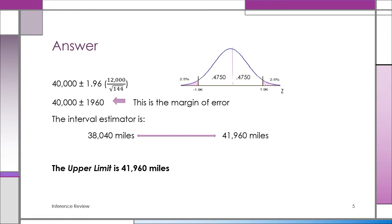The interval goes from 38,040 miles up to 41,960 miles. The probability that this interval contains the true population mean is 0.95. To answer the question: the upper limit of the confidence interval estimator is 41,960 miles.